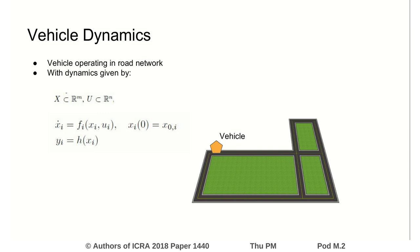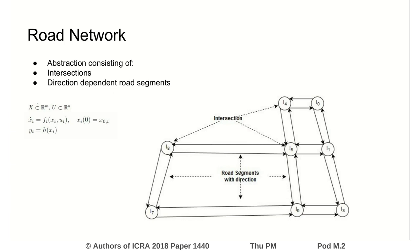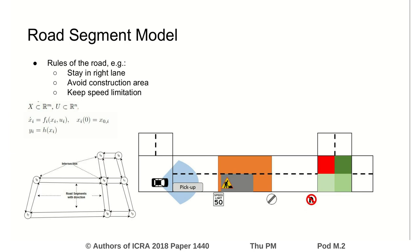The vehicles operate in a road network, which is captured as a hierarchical model described by the vehicle dynamics, a high-level abstraction of roads and intersections, and the road segments the vehicles traverse.